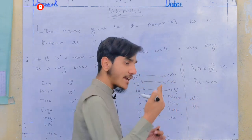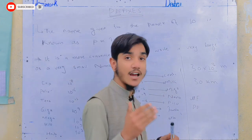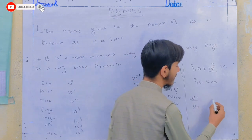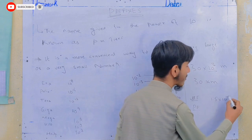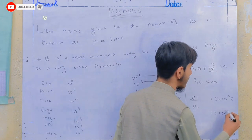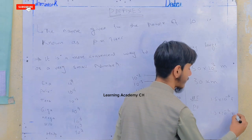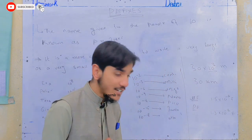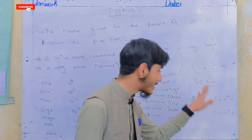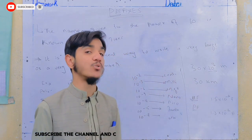For example, 1.5 times 10 raised to the power minus 6 farads is written as 1.5 microfarad. And 1.5 times 10 raised to the power minus 12 farads is written as 1.5 picofarad. So if you have 10 raised to the power minus 6, you have microfarad, and if you have 10 raised to the power minus 12, you have picofarad.